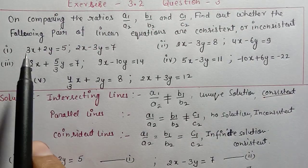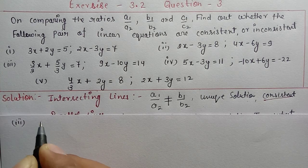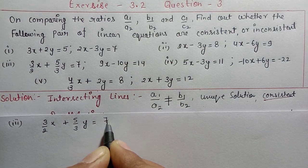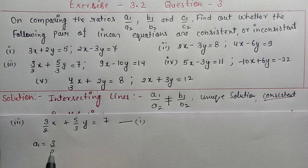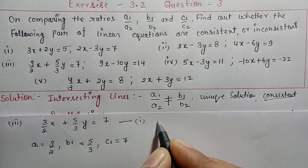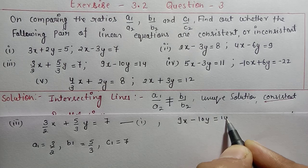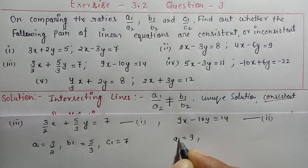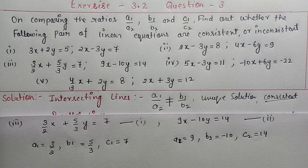Now question 3, we will solve the third part. The third part equation 1 is (3/2)x + (5/3)y = 7. We compare coefficients: a1 = 3/2, b1 = 5/3, c1 = 7. The second line is 9x - 10y = 14, equation number 2. So a2 = 9, b2 = -10, c2 = 14.